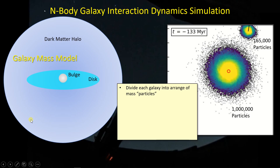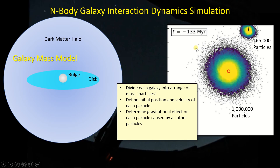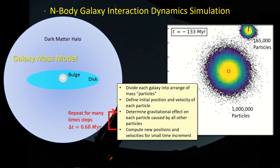Once you've divided the galaxies into mass particles, you define the positions based on the distribution of mass in each galaxy, define the velocity of each particle to get coordinated rotational motion, and define an initial velocity to push NGC 5474 through M101. The first step is to determine the gravitational influence each particle has on every other mass particle, then compute new positions and velocities after a small time step. The authors use a time step of 0.68 million years, modeling from minus 133 million years to positive 200 million years. You just repeat this step-by-step calculation, updating positions and velocities each iteration.